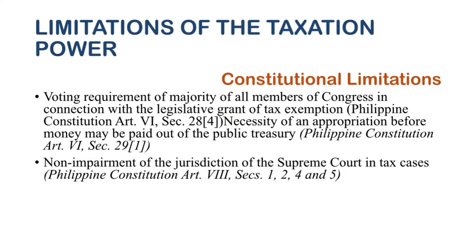Next is non-impairment of the jurisdiction of the Supreme Court in tax cases. As discussed, taxation power can only be exercised by the legislative body. The executive and judiciary are not allowed to enact tax laws. However, if there is any dispute between a taxpayer and the government, the Supreme Court can step in and decide whether the case is valid or not. After enactment of a tax law, the executive branch can implement it.